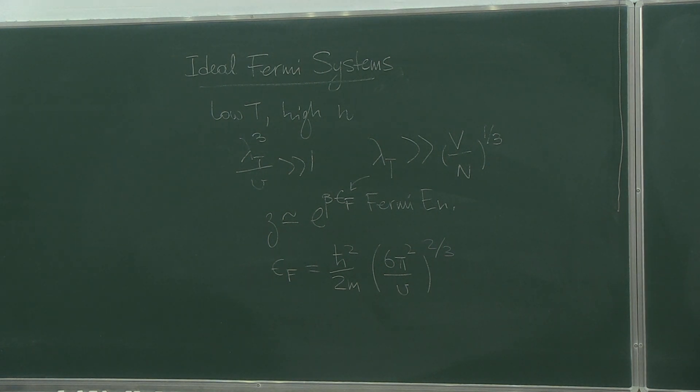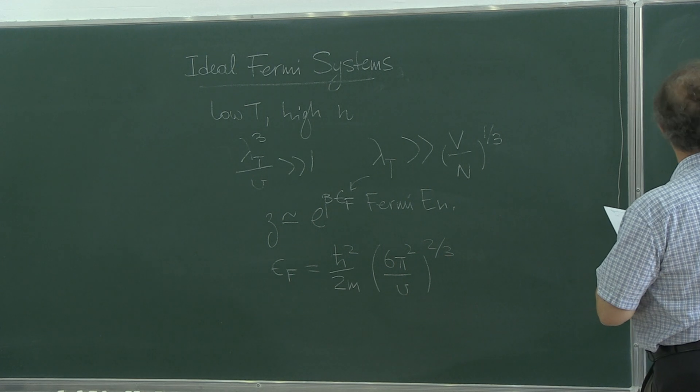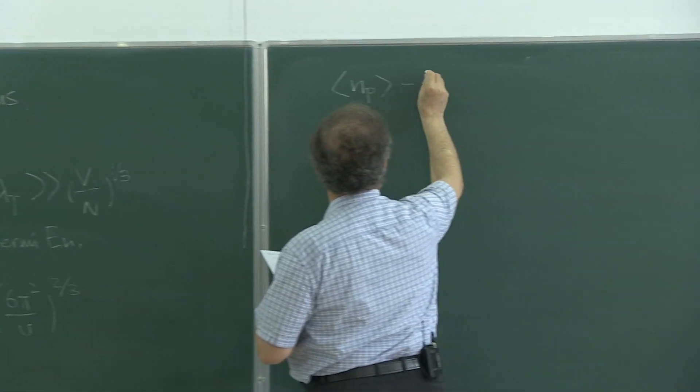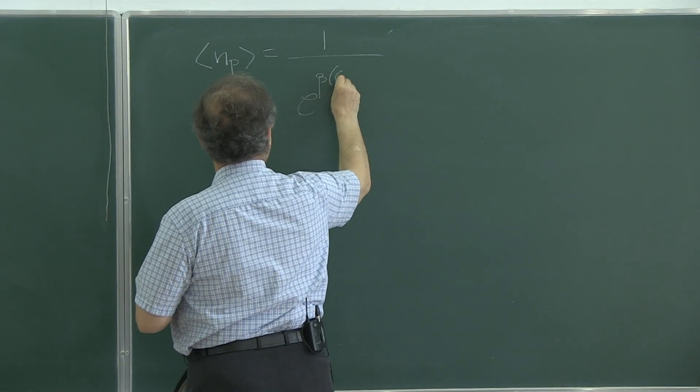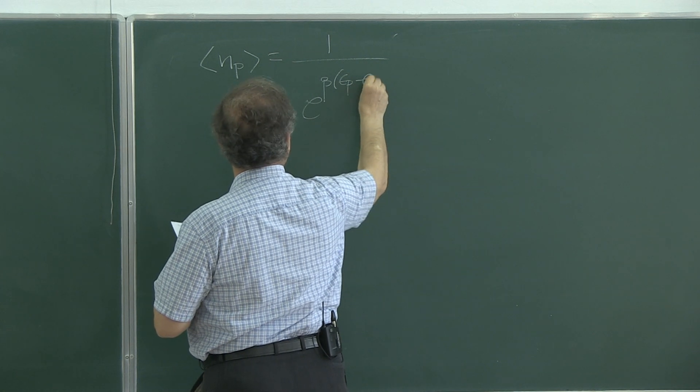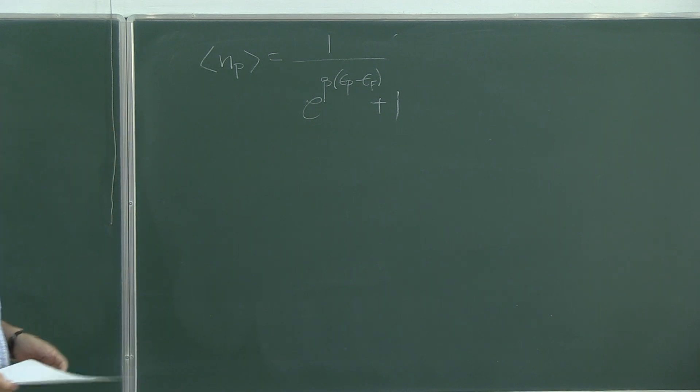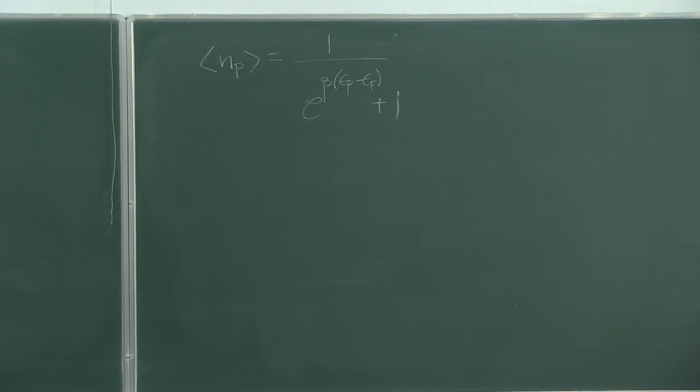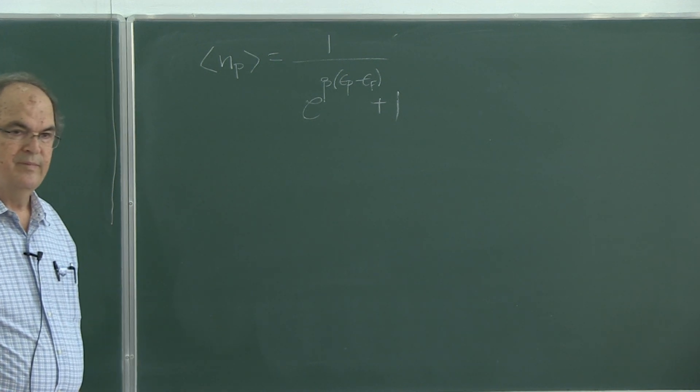The physical significance of this is as follows. When you look at the occupation number, it is of the order of 1 over e to the beta energy minus the Fermi energy plus 1. This is near absolute zero. Mu turns into Fermi energy at absolute zero.